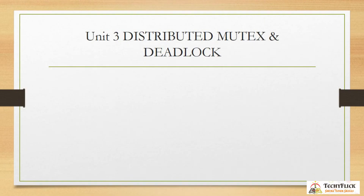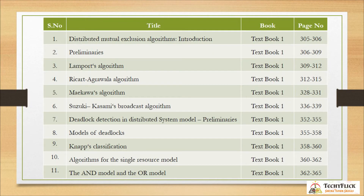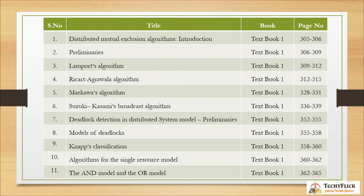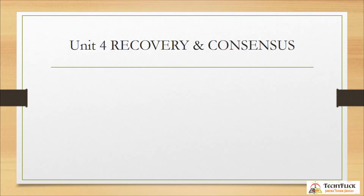Unit 3 is Distributed Mutual Exclusion Algorithms. Introduction pages 305 to 306, Preliminaries pages 306 to 309, Lamport's Algorithm pages 309 to 312, Ricart's Algorithm pages 312 to 315 and 328 to 331, Suzuki-Kasami's Broadcast Algorithm pages 336 to 339. Deadlock Detection in Distributed Systems — Preliminaries pages 352 to 355, Models of Deadlock pages 355 to 358, NAPS Classification pages 358 to 360, Algorithms for the Single Resource Model pages 362 to 362, AND Model and OR Model pages 362 to 365.